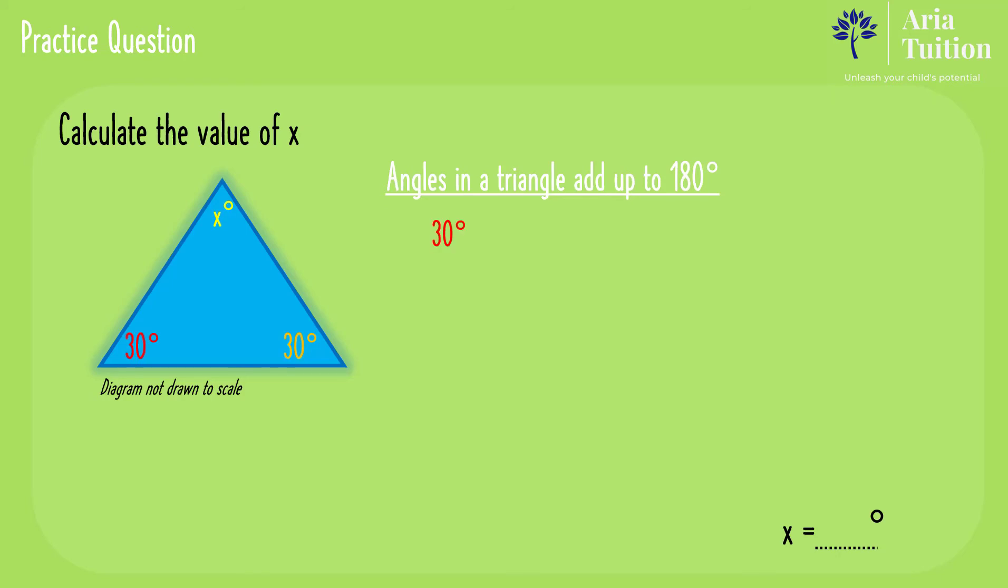Therefore, 30 degrees add 30 degrees add x degrees must equal 180 degrees. We know that 30 plus 30 makes 60 degrees plus x degrees equals 180 degrees.